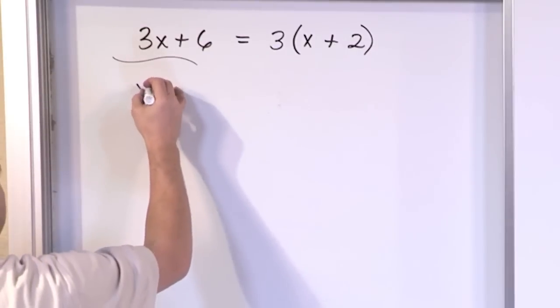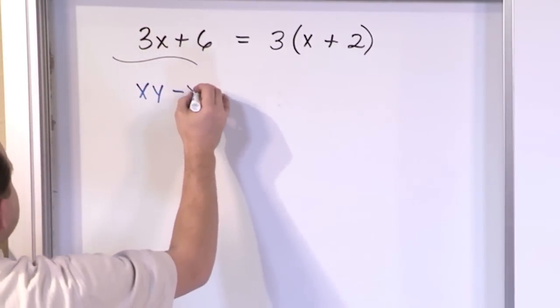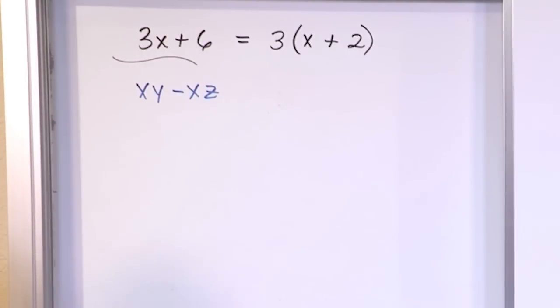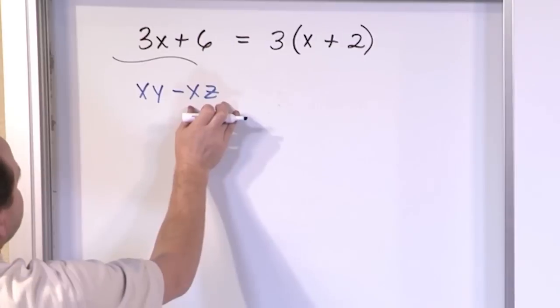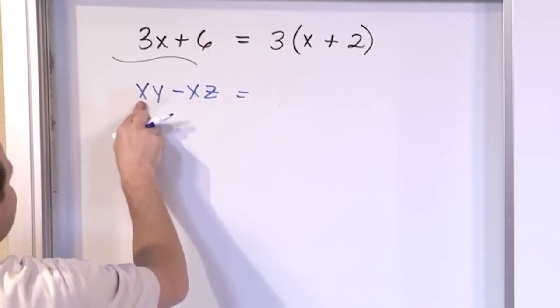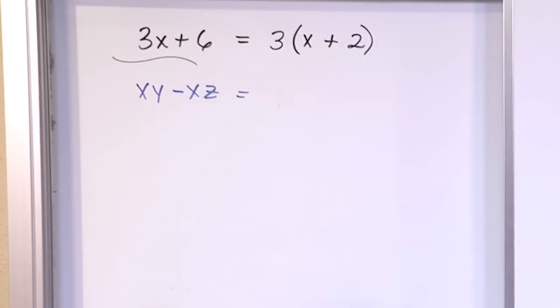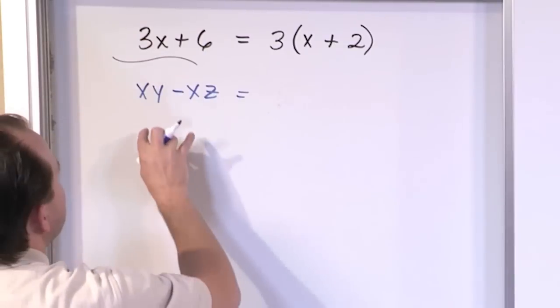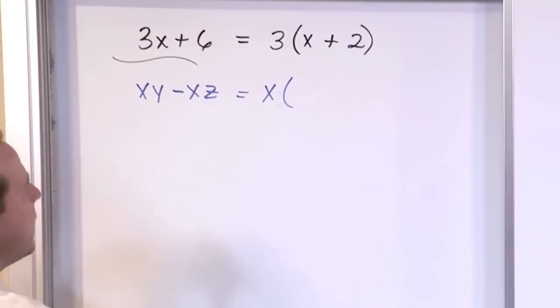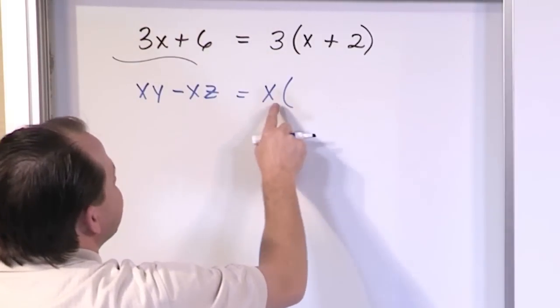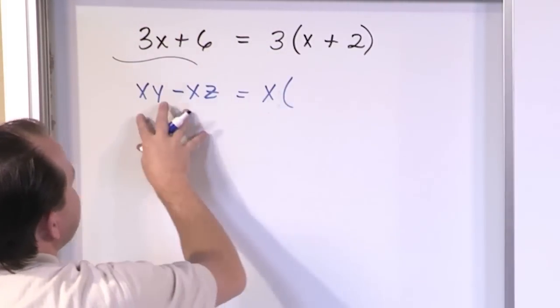What if I have an expression x times y minus x times z? So what I'm doing is I'm looking, there's no numbers here, so it looks hard, but then you realize I'm looking here for things that are common. What's common here? I have an x here and I have an x here. That's the only thing common. I have no numbers, and I have no other letters that are common. Since x is common, I pull it out and I open my parentheses.